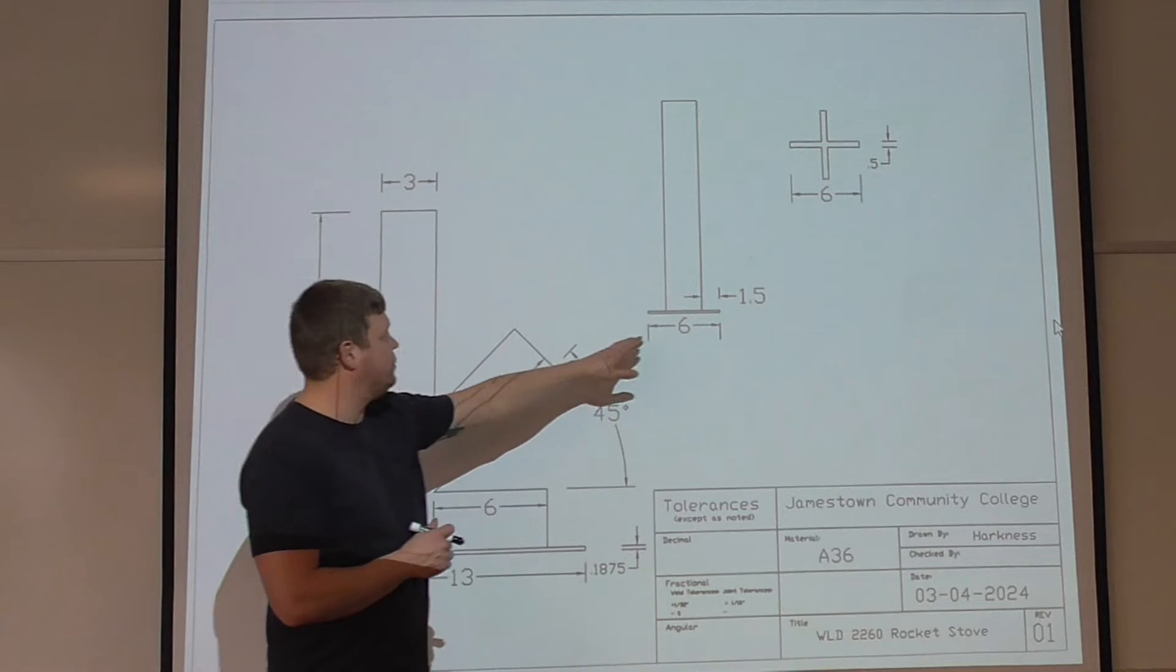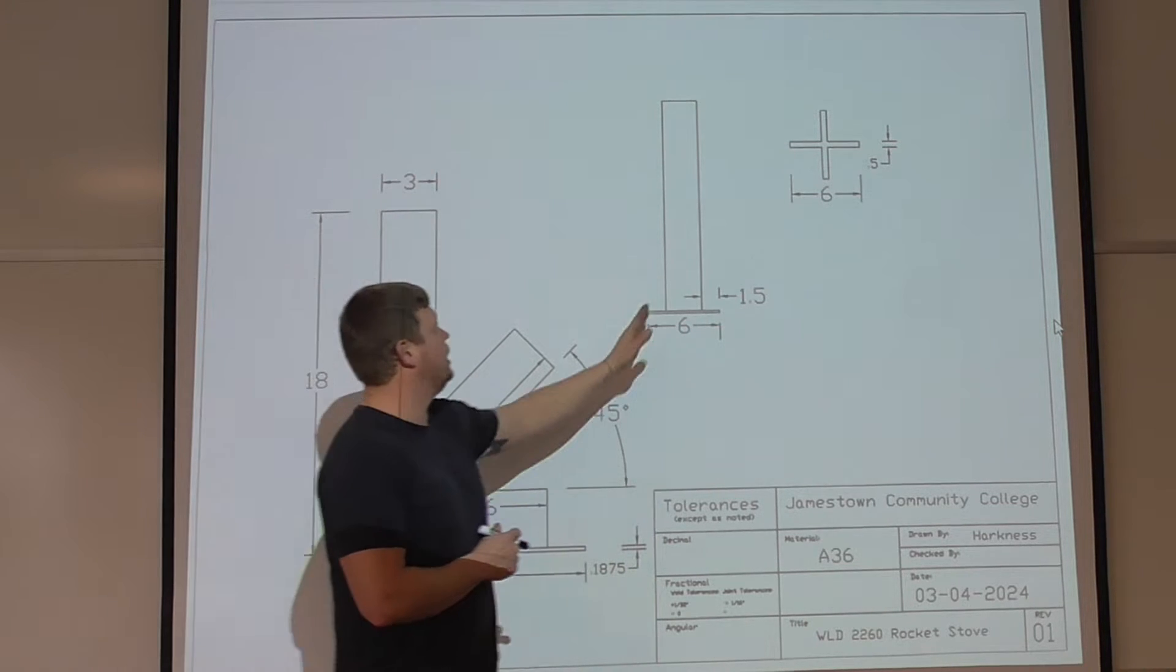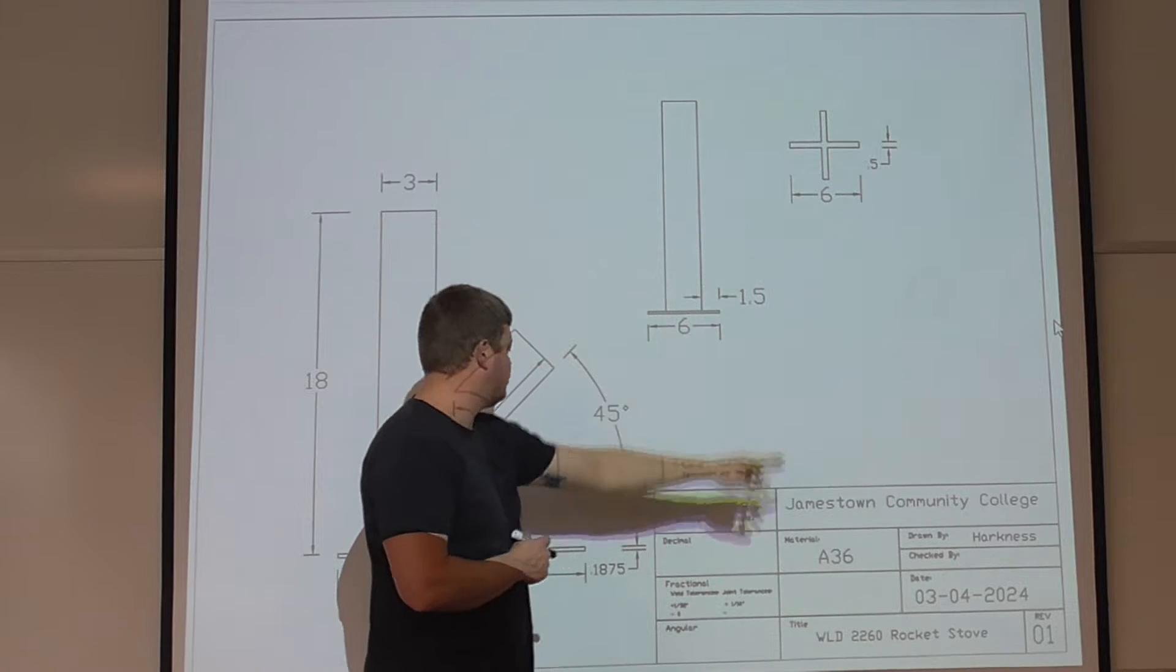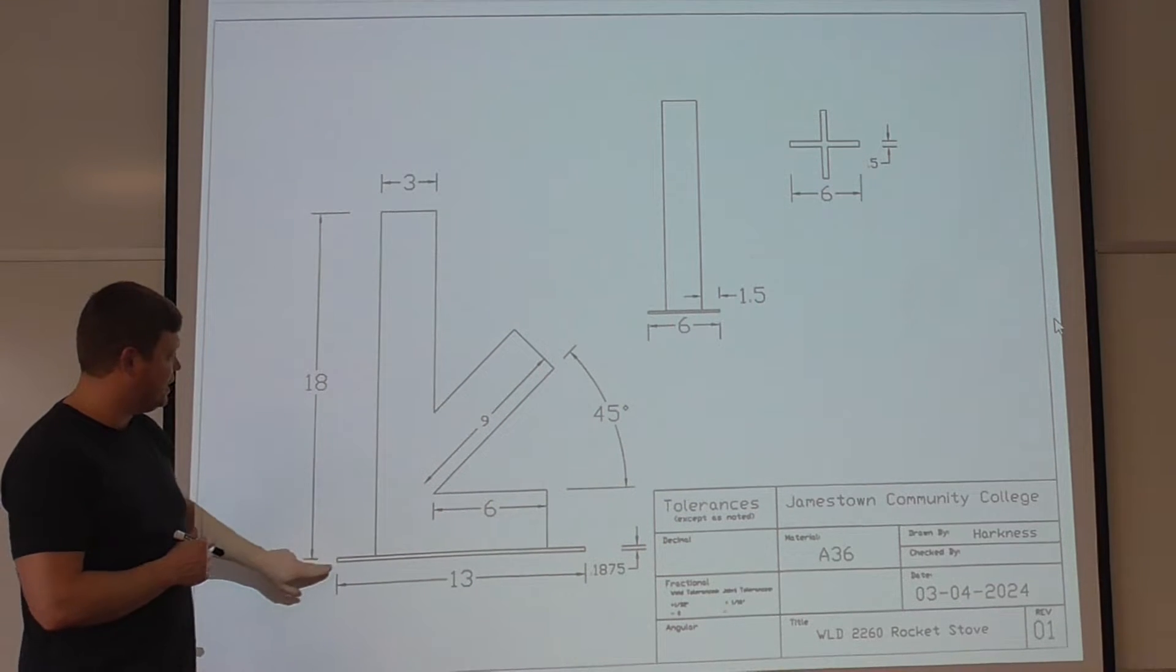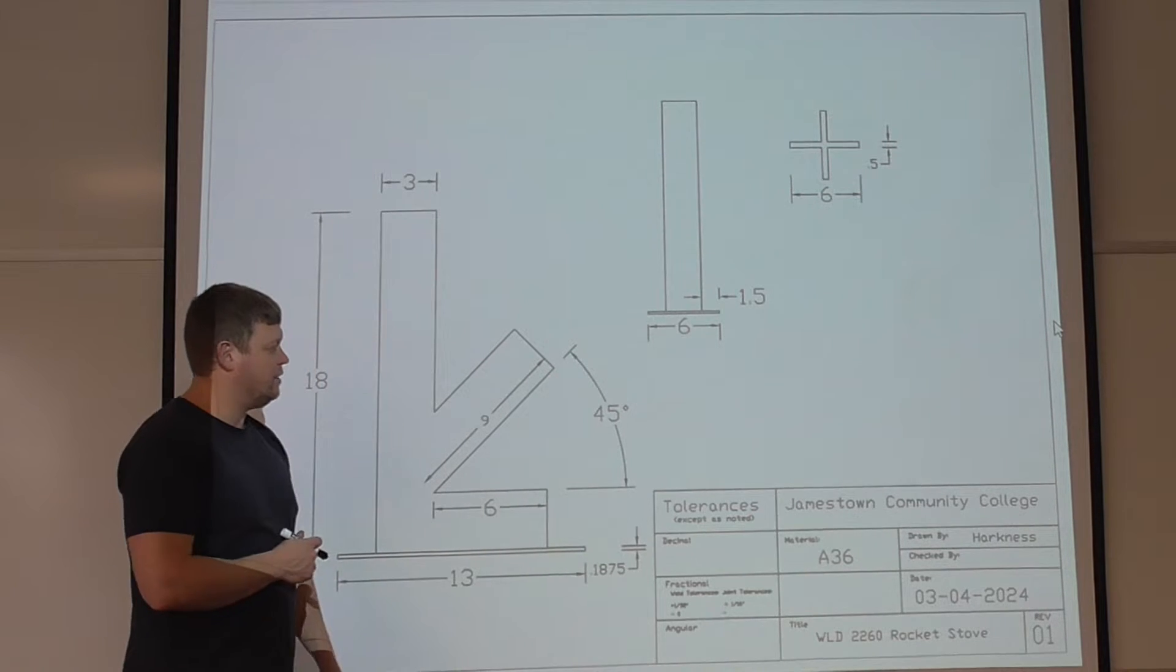Here's kind of a back view or a side view, however you want to look at it. There's your 6 inch by 13 inch plate again, that's your 18 inch upright, spaced out about an inch and a half on this end of thing. Let's go back down to here, I almost forgot, this is actually 2 inches. I forgot to put that dimension in there, that's also 2 inches.